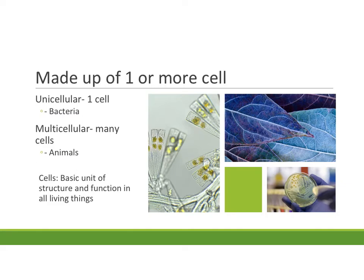Our first characteristic is it has to be made up of one or more cells. Many organisms are made up of just one cell — we call that unicellular, and bacteria is a great example. If something is made up of many cells, we call that multicellular — animals and plants would be examples. The definition of a cell is the basic unit of structure and function in all living things.